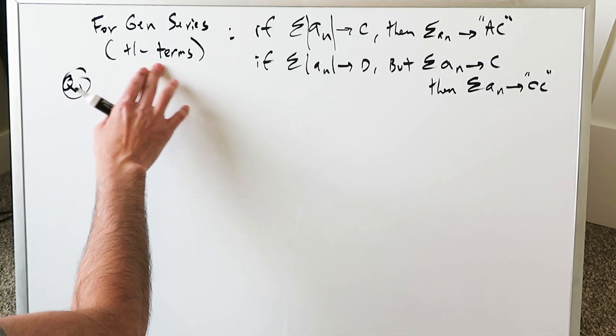Remember the two key statements: if a series is absolutely convergent, then its absolute value counterpart was convergent; if a series is conditionally convergent, then the absolute value version of that series was divergent. That brings us to the end of this video. Hopefully there are no confusions after this, and these questions show the benefit of knowing those two rules. Thank you, have a good day. Bye.